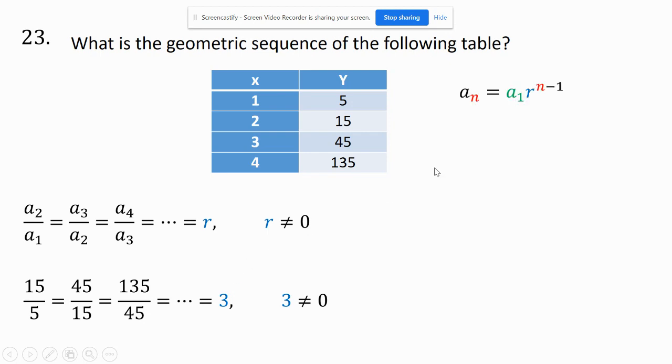And the way I can write the equation is this: I can find any term by taking the first term times r to the n minus 1 power. And the reason it's n minus 1 is because you already have one term right here, this is a₁, so I subtract that from my exponent. So to find any particular term or to write an equation for this,